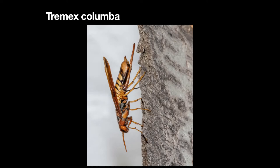Stinging wasps — the aculeate Hymenoptera: ants, wasps, and bees — do not lay any eggs through the ovipositor, which is now called a sting. It is used mainly for protection.